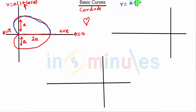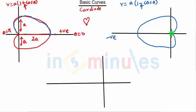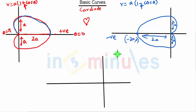Then we have the equation r = a(1 - cos θ). With the minus sign, the tip of the heart will be on the negative side of the x-axis, so this curve will be something like this. This part will be 2a, and this point will be (-2a, 0). This will be a, and this will also be a. These are the two cardioids.